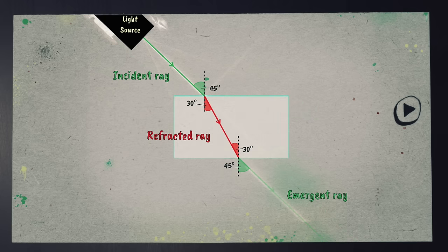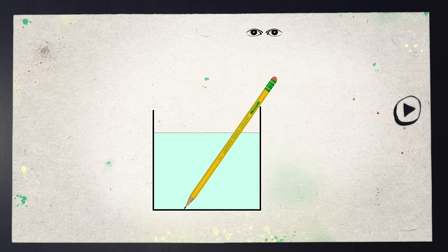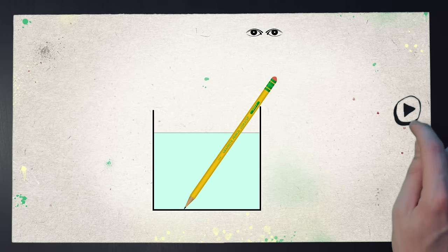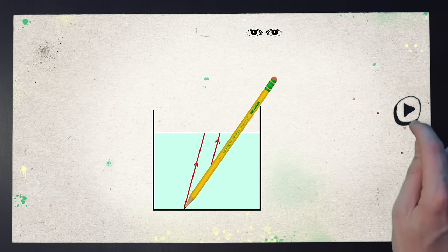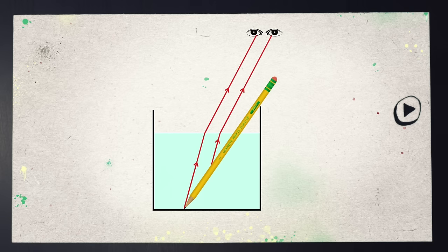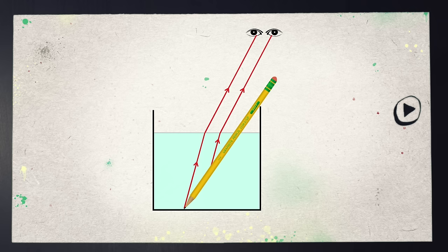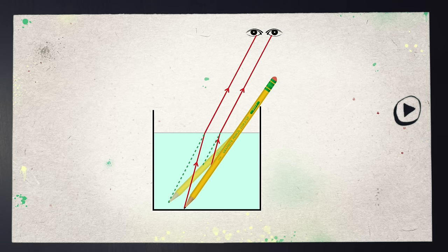So how does refraction affect how we see the pencil in water? Well, light reflected off the pencil moves away from the pencil through water, and it's refracted as it travels between water and air. It speeds up when exiting the water, bending away from the normal before reaching your eyes. Your brain assumes that light travels in straight lines, so it looks like the pencil has been bent to reach the point where you think the light beam has come from.